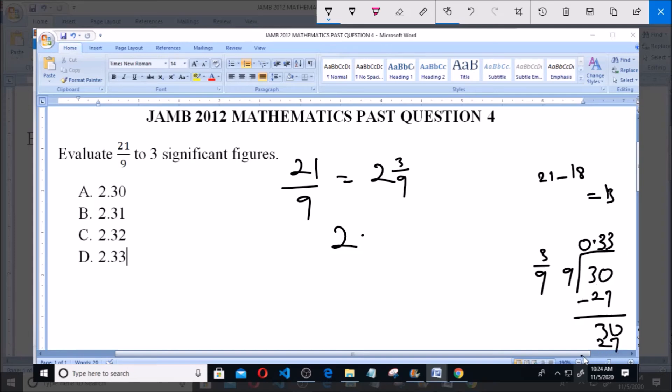Nine into 30, we give us 3 again. So 3 times 9 gives us 27. You subtract again, you still have 3. Now if you continue like that, we'll continue having 0.333... continuously. So you can simply say that 2 whole number 3 over 9 is the same as 2.333... But the question says to three significant figures.